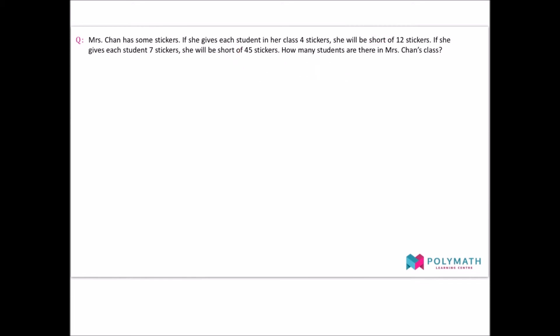Similar to the previous question, we start off by letting the number of students be one unit. Therefore, in the first situation, Mrs. Chan will give a total of four units of stickers. This time round, however, Mrs. Chan's number of stickers will not be enough to meet these four units worth of stickers as she is short of 12. We therefore draw Mrs. Chan's number of stickers to be below four units and we label this shortage 12.